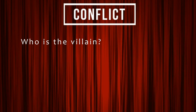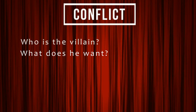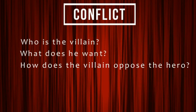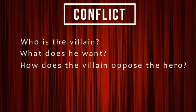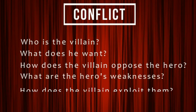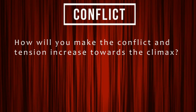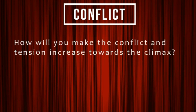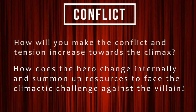In the central 50% of the movie — the conflict phase — we need to ask: who is the villain? What does the villain want? What is his goal? How does the villain oppose the hero — his goal should oppose the goal of the main character. We need to identify the hero's weaknesses. How does the villain use these weaknesses to exploit the character and try to defeat him? How does the conflict and tension increase towards the climax as it should? And lastly, how does the hero overcome his major weakness and change himself in order to win and defeat the villain?